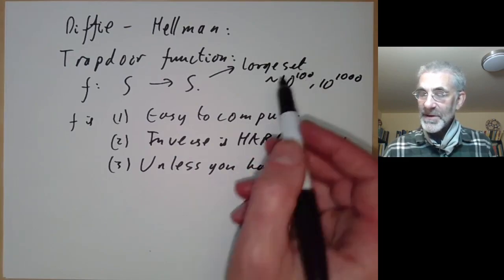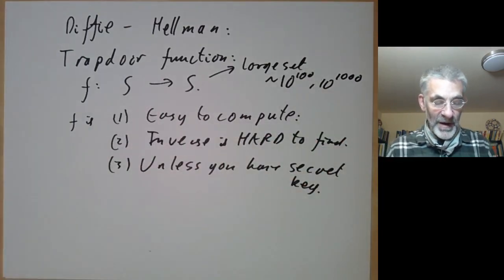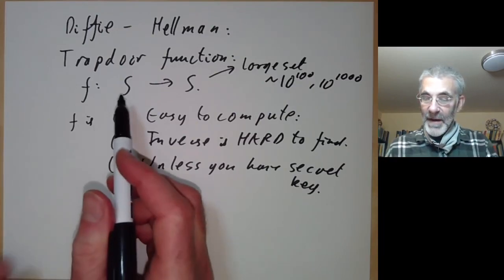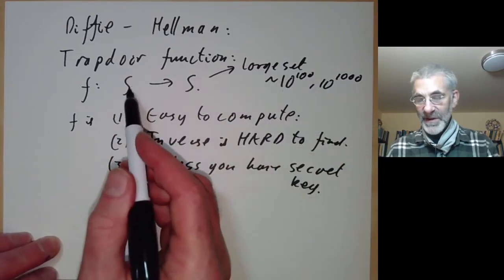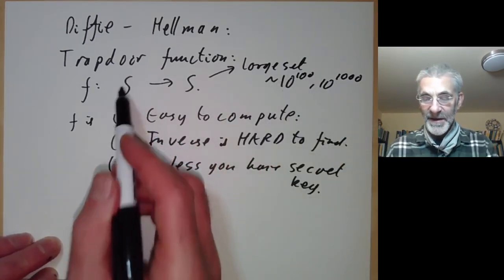S might be something like integers from 1 to 10 to the 100, so you can encode messages by selecting an element of this set S.